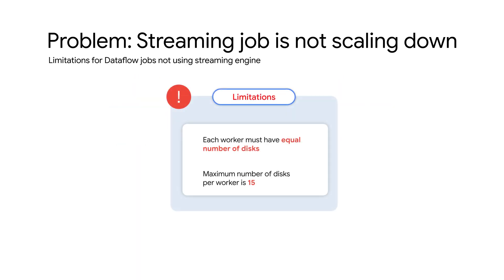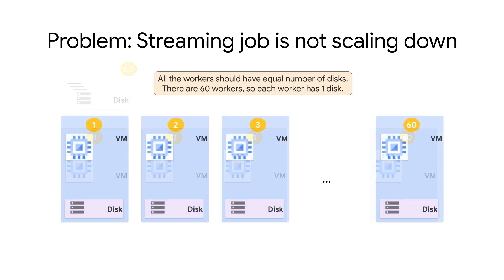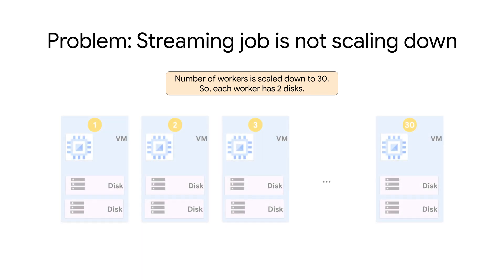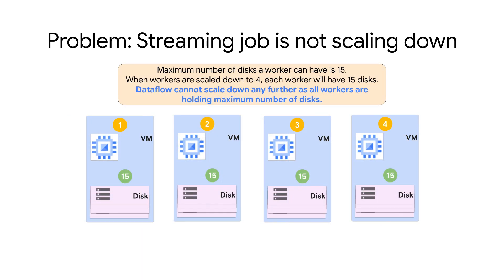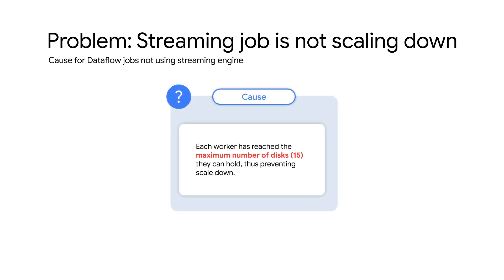Next, check if you are using the streaming engine. If the job is not using the streaming engine, be aware that Dataflow requires each worker to have the same number of persistent disks, with a maximum of 15 disks per worker, and this could be affecting its ability to auto scale. For example, if there are 60 disks and 60 workers, then each worker will have one disk. If the job scales down to 30 workers, each worker will now have two disks. However, since the maximum is 15 disks per worker, Dataflow cannot scale down below four workers, because that is the point at which each worker would own 15 disks.